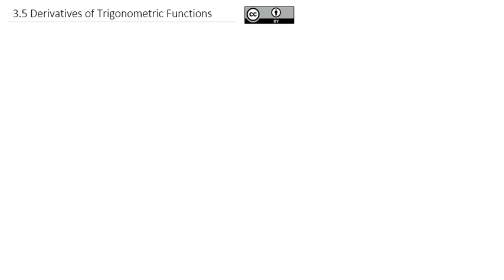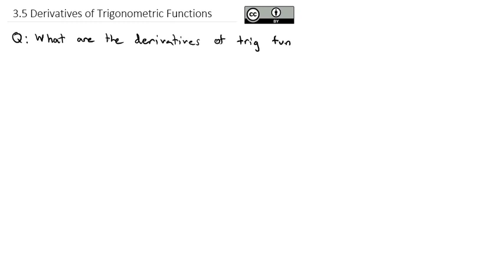Up until now, we've avoided really talking about trigonometric functions and their derivatives. So today we're going to attempt to answer the question of what are the derivatives of the trig functions — sine, cosine, tangent, and also the less used ones of cosecant, secant, and cotangent. To begin setting this up, we're going to look at the graph of f(x) = sin(x).